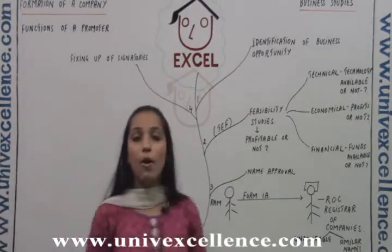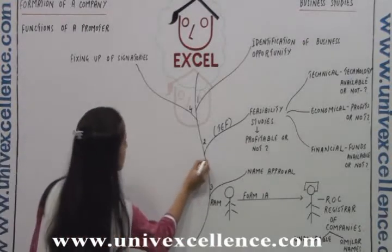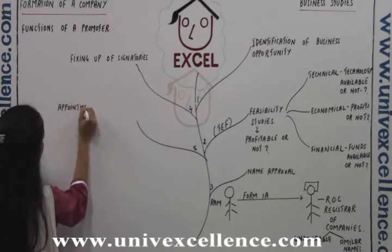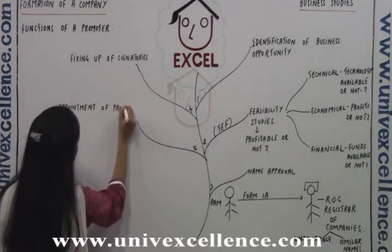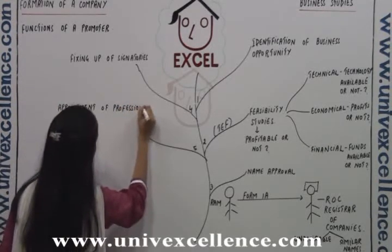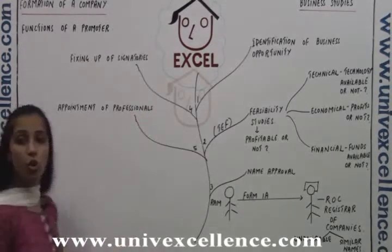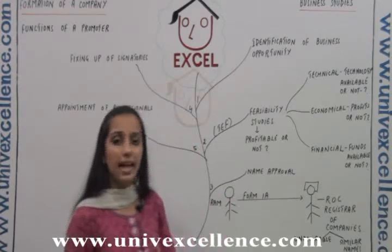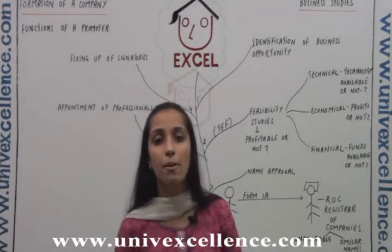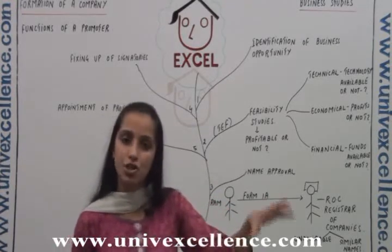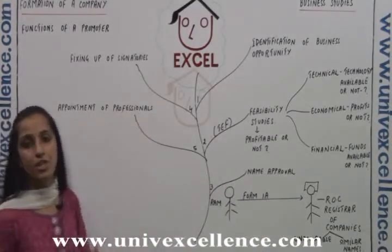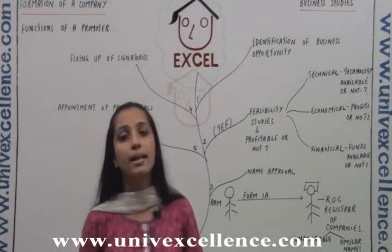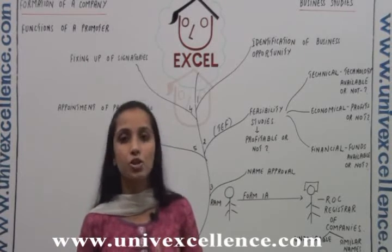The fifth function is appointment of professionals. It is not necessary that the promoter is a professional. For example, if Ram was an engineer, he probably would not have any knowledge about how a company should be formed, being from a different stream of education. In that case, he will need to appoint some professionals to guide him in the formation of the company. Professionals like chartered accountants, bankers, and auditors are appointed by the promoters to assist in the formation of the company.